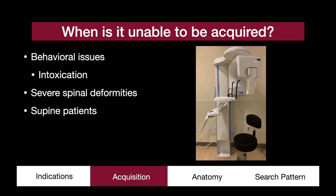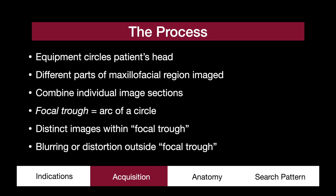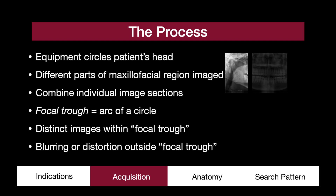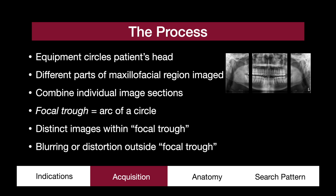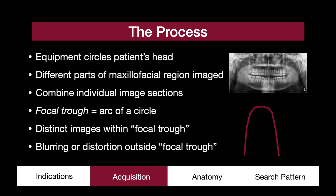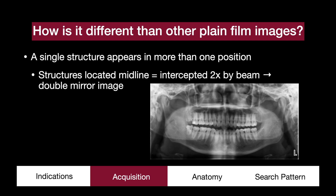Those who are unable to remain in a sitting or standing position with their head in place may have issues — for instance, those who are intoxicated, who have positional limitations due to spinal deformities, or who are bed-bound. With the head positioned, the gantry encircles the head, different parts of the maxillofacial region are imaged, and these images are combined. Think of your iPhone panoramic feature. There is a focal trough — basically the arc of a circle that follows the jaw contour. Distinct images are within this focal trough, but blurring and distortion arise outside it. In a panoramic study, a single structure may appear in more than one position, as midline structures may be intercepted twice by the beam, like a double mirror image of the c-spine.